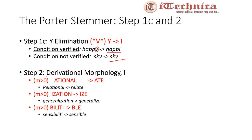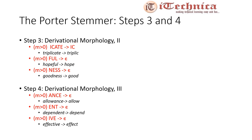Step 2 is called derivational morphology one: if m > 0 and the word ends in ational, convert to ate; if it ends in isation, convert to ize; if it contains ability, convert to ble — for example sensibility becomes sensible. Steps 3 and 4, derivational morphology two and three, apply similar rules for suffixes like icate, ful, ness, ance, ent, and ive.